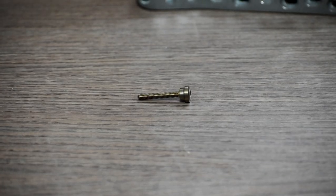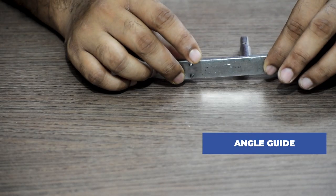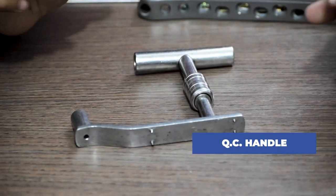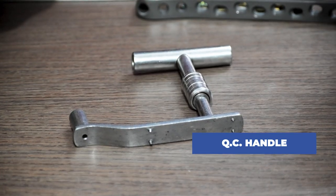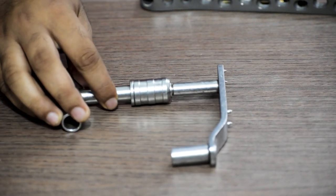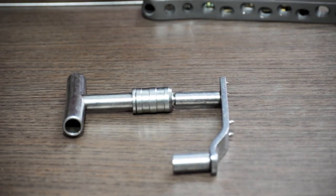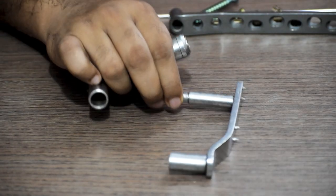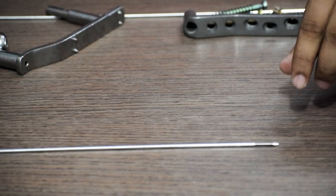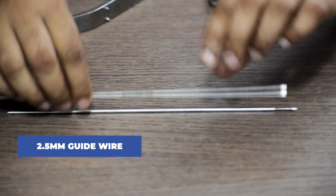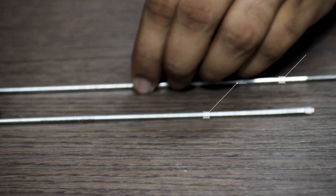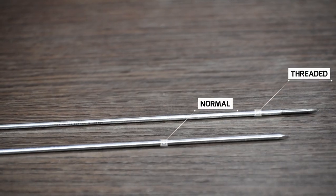Coming down to the instruments, we will require angle guide. We will require guide wires, threaded as well as the regular ones. As you can see here, this one is a threaded one and this one is the normal one. We will require both kinds of guide wires.